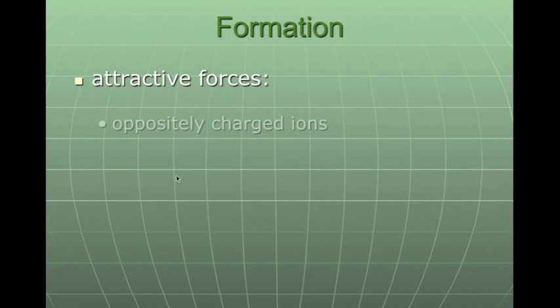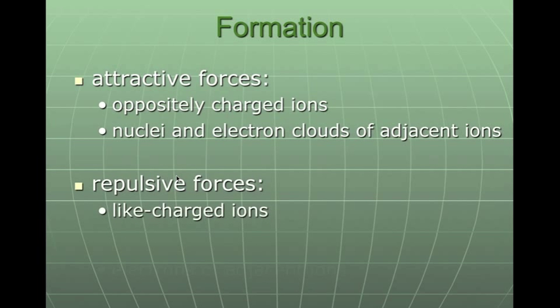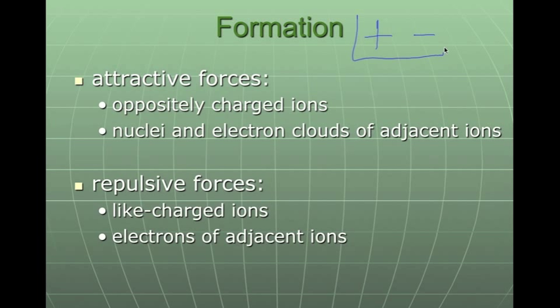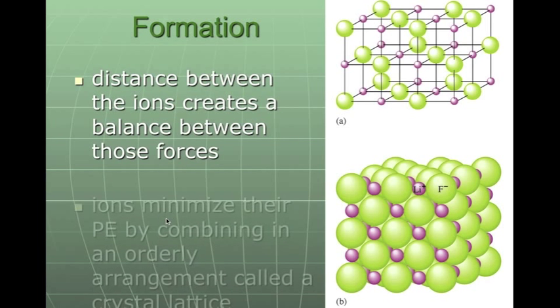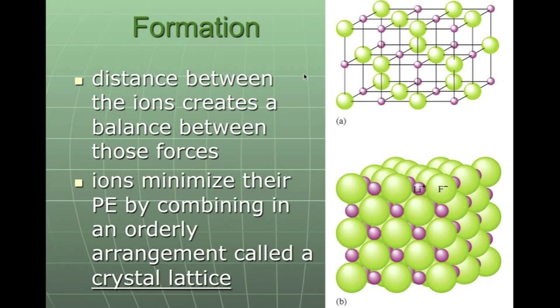When they form, we have an attractive force and repulsive forces. Ionic bonds are like magnets, meaning we have a positive and a negative end. They're attracted to each other because one's positive, one's negative. One gives and one takes. The repulsive forces happen when like charges are near each other. When they form and line up, the distance between the ions creates a balance between those forces, meaning the positive and the negatives line up, and this creates a crystal lattice.